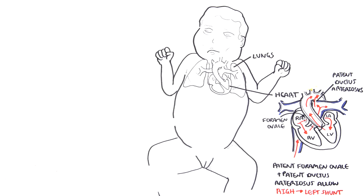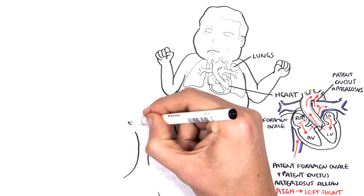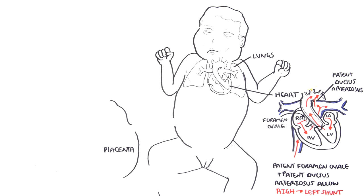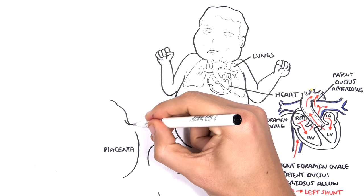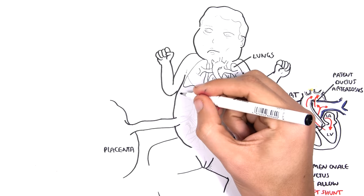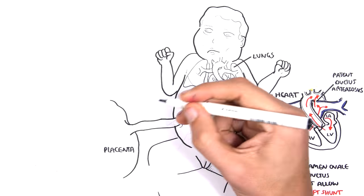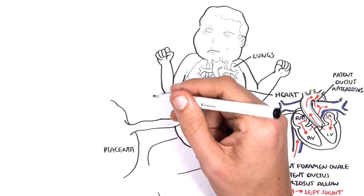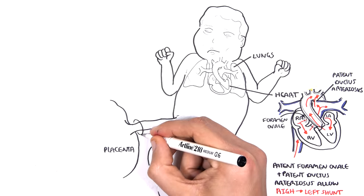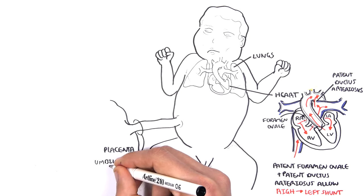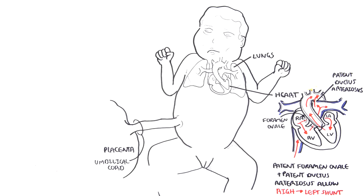In fetal circulation, there is really no need for blood to go into the lungs because the fetus is not breathing air anyway. Rather, the fetus relies on the oxygen delivered by the maternal circulation in the placenta. The placenta is this important connection between the mother and the fetus, delivering oxygen and nutrients to the growing fetus via the umbilical cord, which attaches the fetus to the placenta.